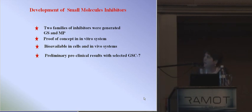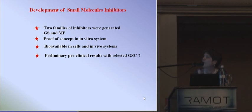We currently have two families of inhibitors that we term GS and MP. They provided proof of concept in in vitro systems as substrate-competitive inhibitors. They were bioavailable in cells and in vivo systems, and we have some preliminary and preclinical results with one of the selected inhibitors, GSC7, which was also shown to be orally bioavailable.